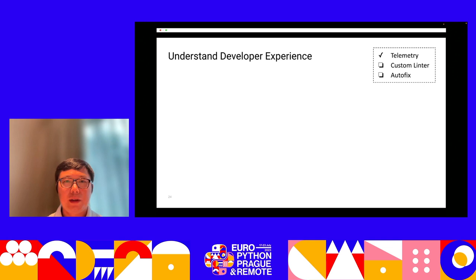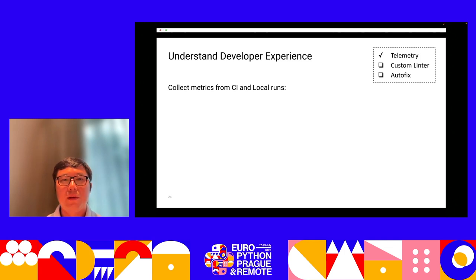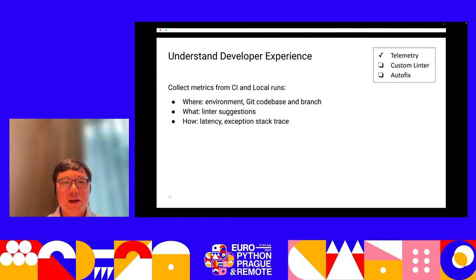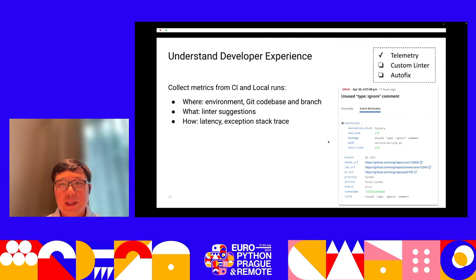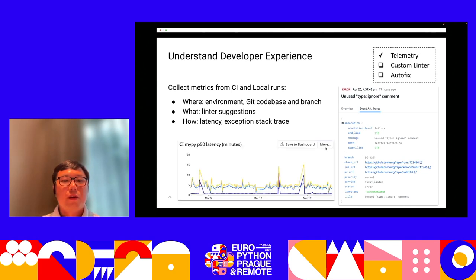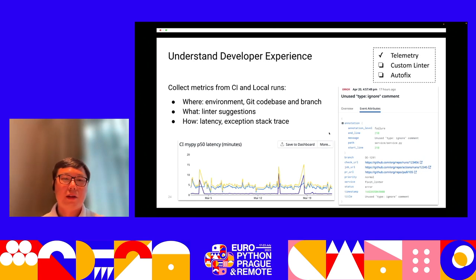Telemetry is the way to help us understand what's going on. We collect metrics from CI and local linter runs to understand where our linters run, in which environment, which codebase, what kind of suggestions they make, and how they perform — including latency and any exceptions raised. We use Datadog to collect these metrics. For example, we can know that MyPy flagged an unused type-ignore comment on a specific pull request at a specific line, and we can aggregate latency metrics to work on speed improvements.